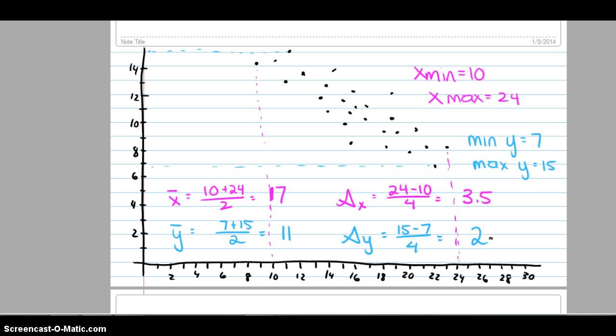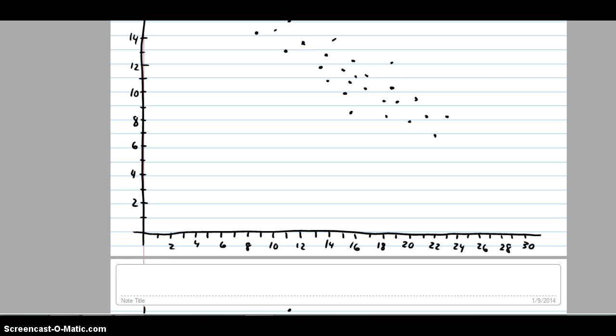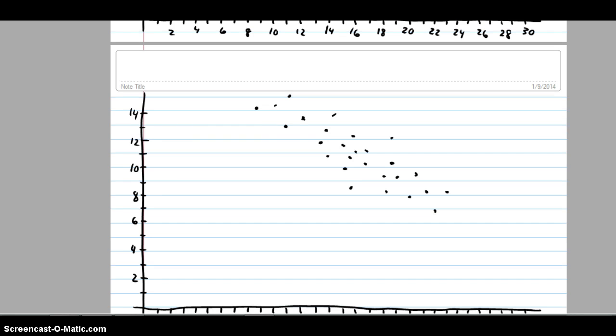And I need to estimate r. What might I call r in this oval? I might call it 0.85. Now, because it's going down, it's a negative 0.85. When I do my regression line, everything works just the way it did for the positive regression line.